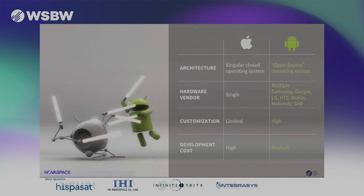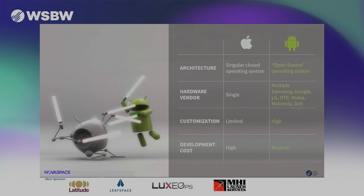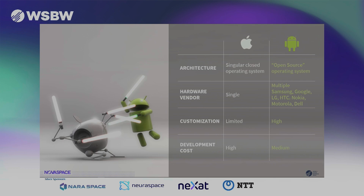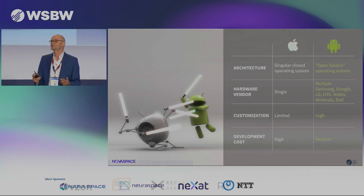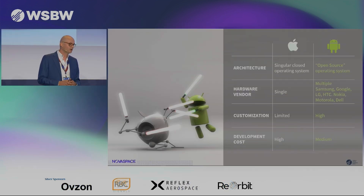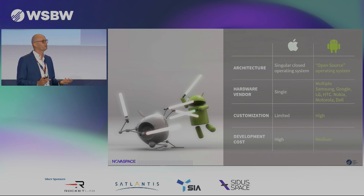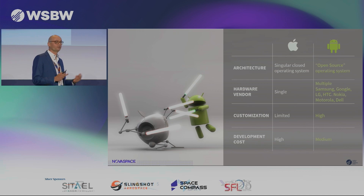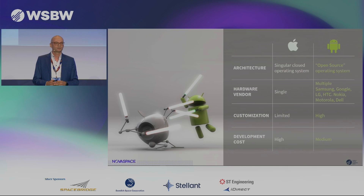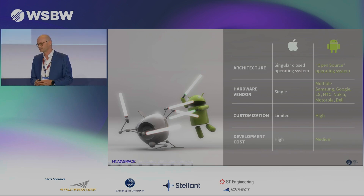When you put Apple and Android next to each other, the technical differences clearly stand out. Apple uses a closed source system with only a single hardware vendor, while Android basically has an open source system with multiple hardware vendors, including Samsung, Google, and so on. This design choice comes with implications: Android allows for more customization, while Apple has better network control and typically a bit better performance.